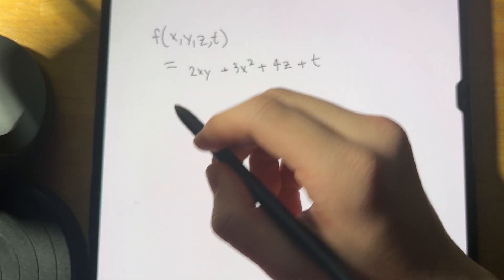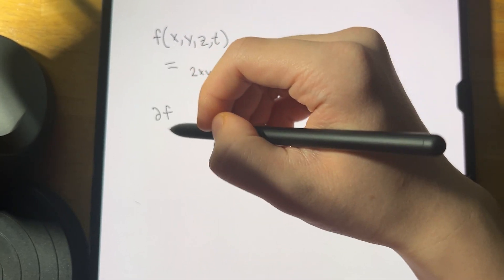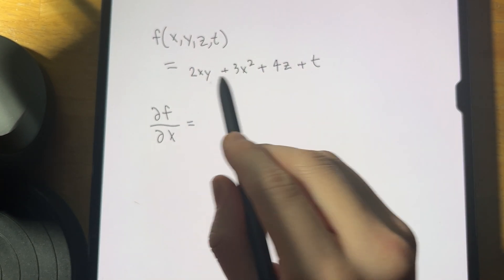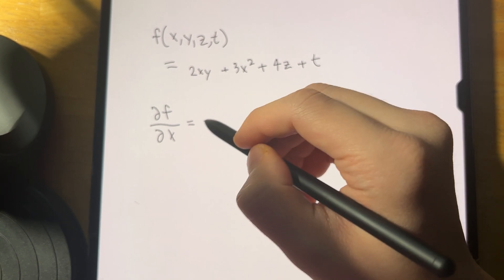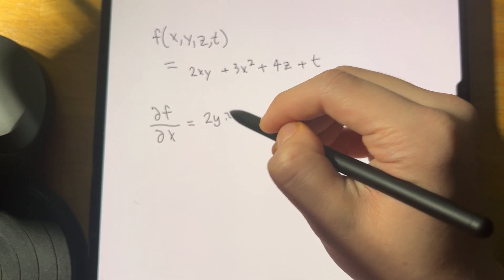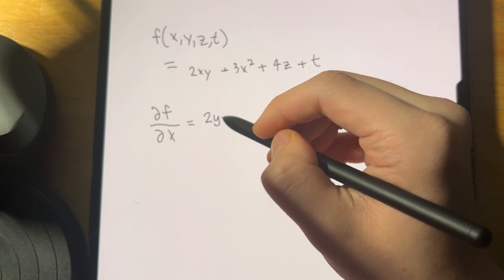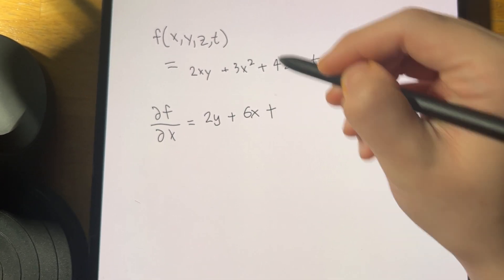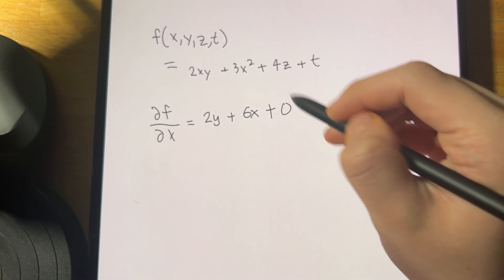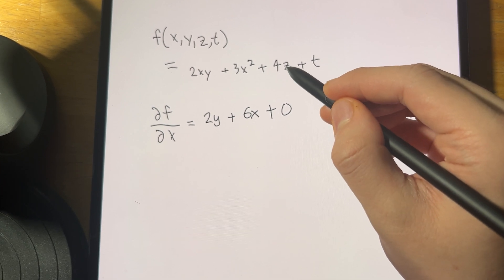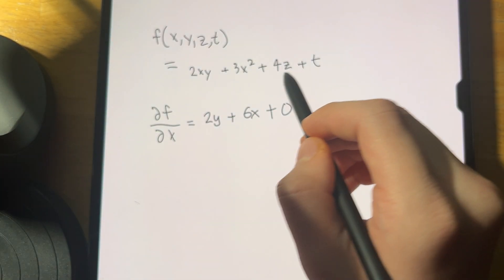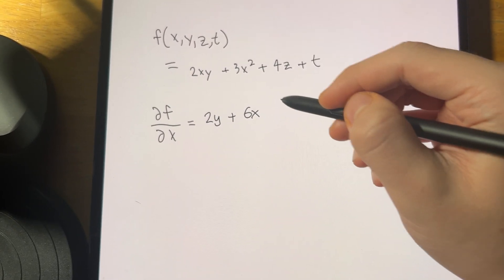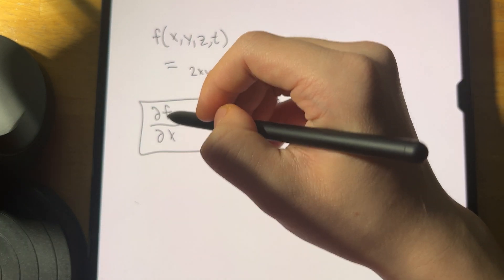Now let's do the first partial derivatives. ∂f/∂x: term by term — 2xy gives 2y, 3x² gives 6x, and 4z has no x so it's treated as a constant, giving zero. t also gives zero. So ∂f/∂x = 2y + 6x.